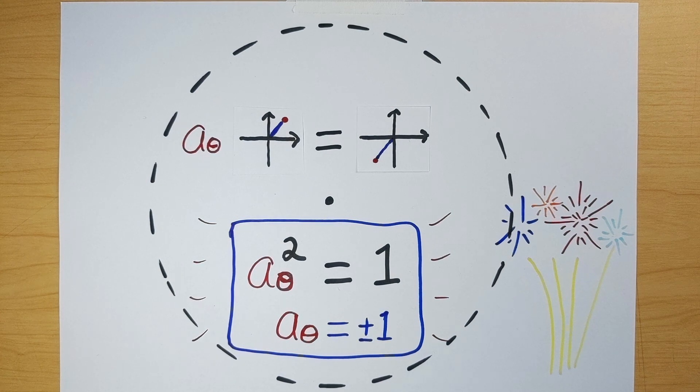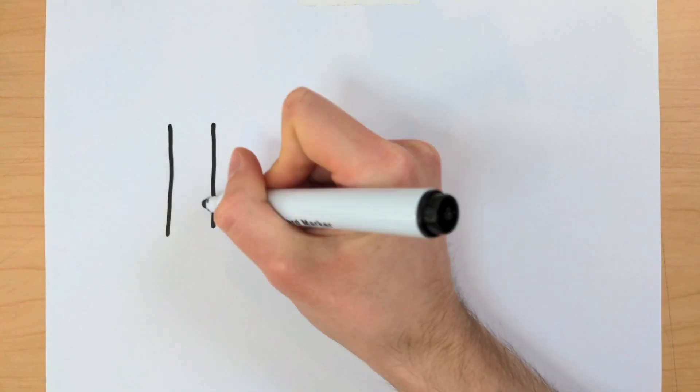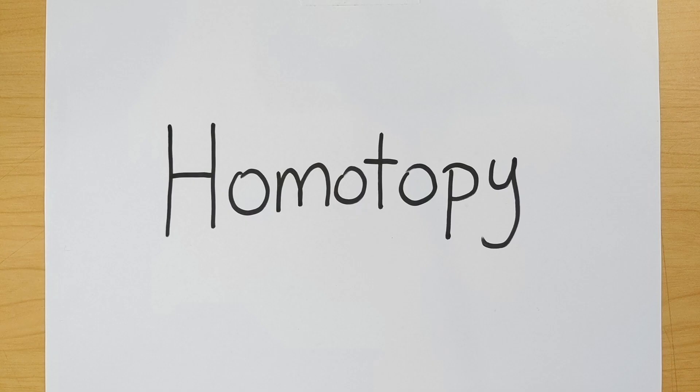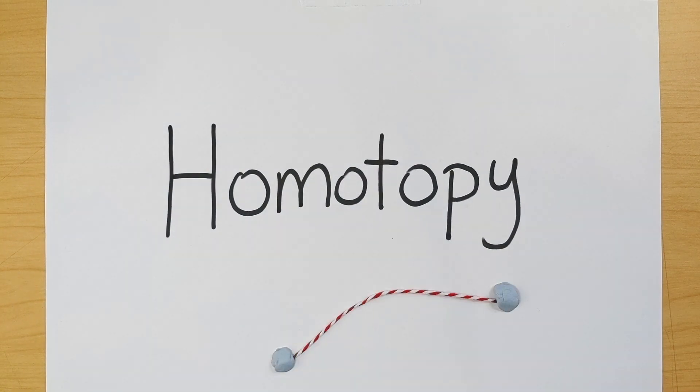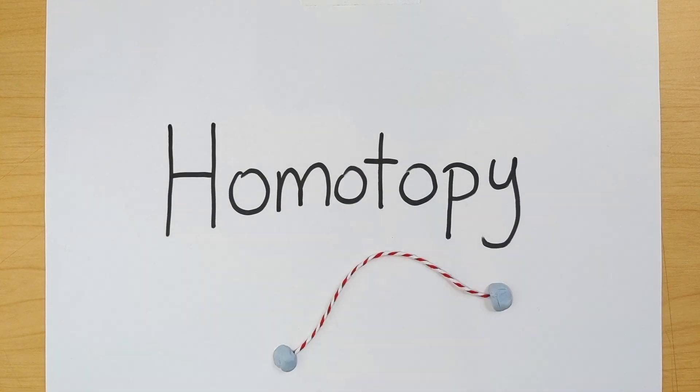This is to me mind-blowing. Just by thinking about this configuration space, we can determine what kinds of particles exist in the universe. What we've been talking about here is actually a branch of topology called homotopy. If two paths through a space with the same start and end points can be smoothly deformed into each other, they are considered equivalent, or homotopic.